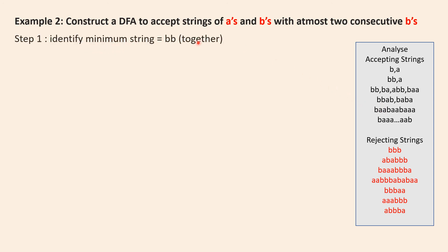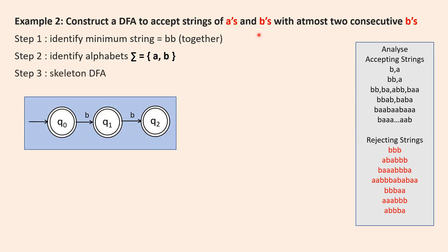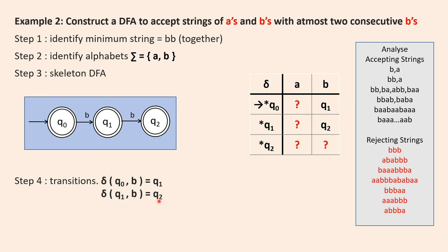The first step is to identify the minimum string, which is two B's together. The input symbols are A and B. The skeleton diagram: if I have only one B it should be accepted, and if I have at most two B's together it should also be accepted. Q0 on B goes to Q1 and Q1 on B goes to Q2. Q0 is the start state and also a final state, and Q1 and Q2 are also final states. I have filled the two cells with respect to the skeleton DFA transitions.